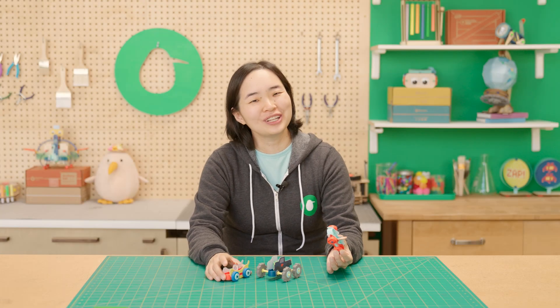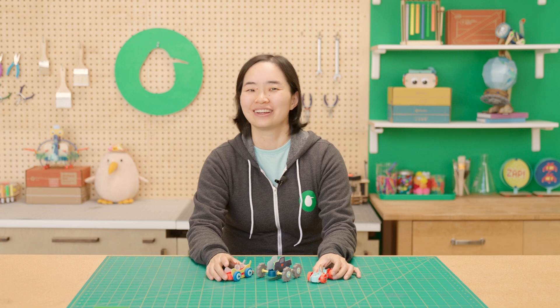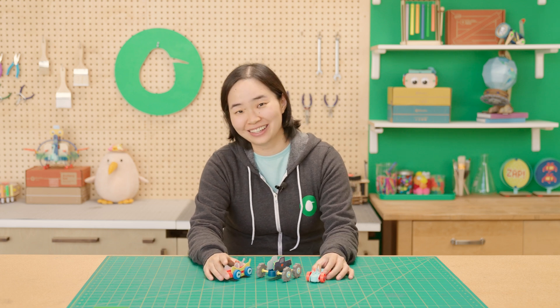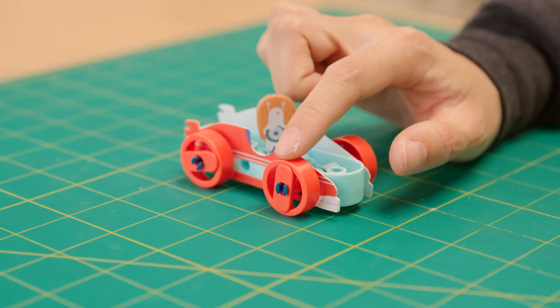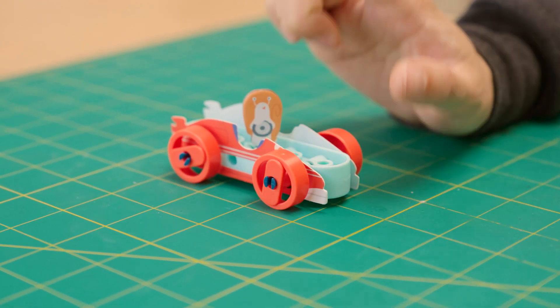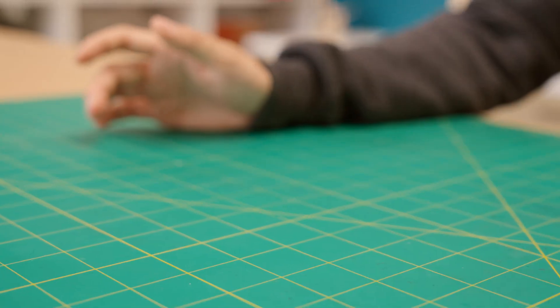You might notice that your cars are pulling off some awesome moves. Now, how are they doing that? Well, there's actually some cool science and engineering happening here. If your stunt car has plastic wheels that are hard and smooth, it'll help your car move in a straight line and fast.